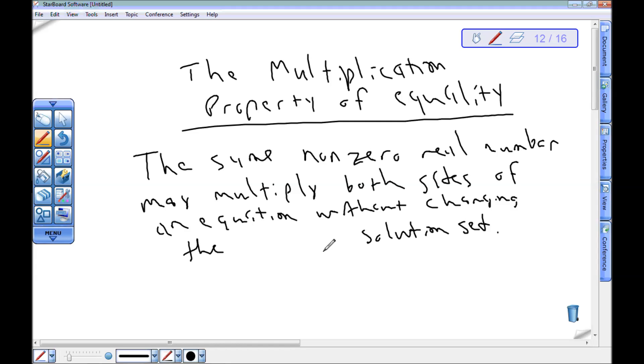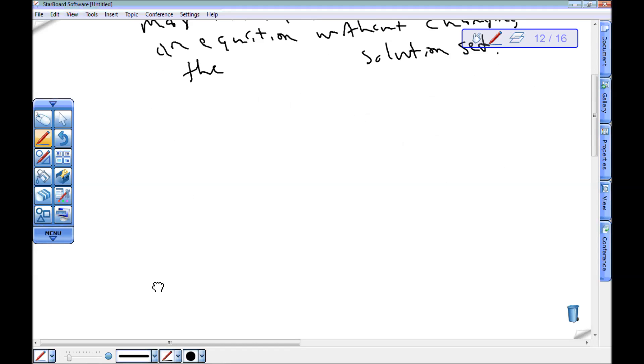But the key here is I'm not changing the solution set by multiplying both sides. To make this shorter: a equals b and a times c equals b times c are equivalent equations, so long as c is not equal to zero.